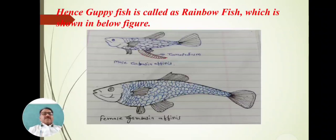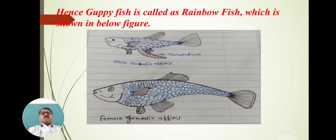Guppy fish is called rainbow fish due to the varied color structure. Because in Gambusia affinis, no two males have the same color — it is color variation. Hence Gambusia affinis or guppy fish is called rainbow fish.